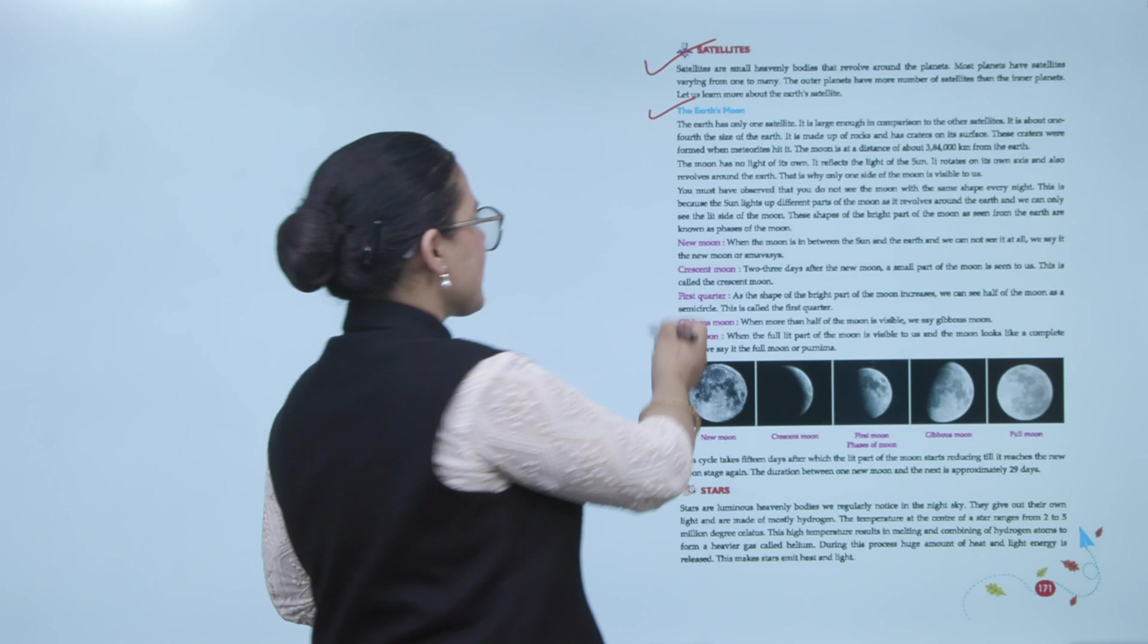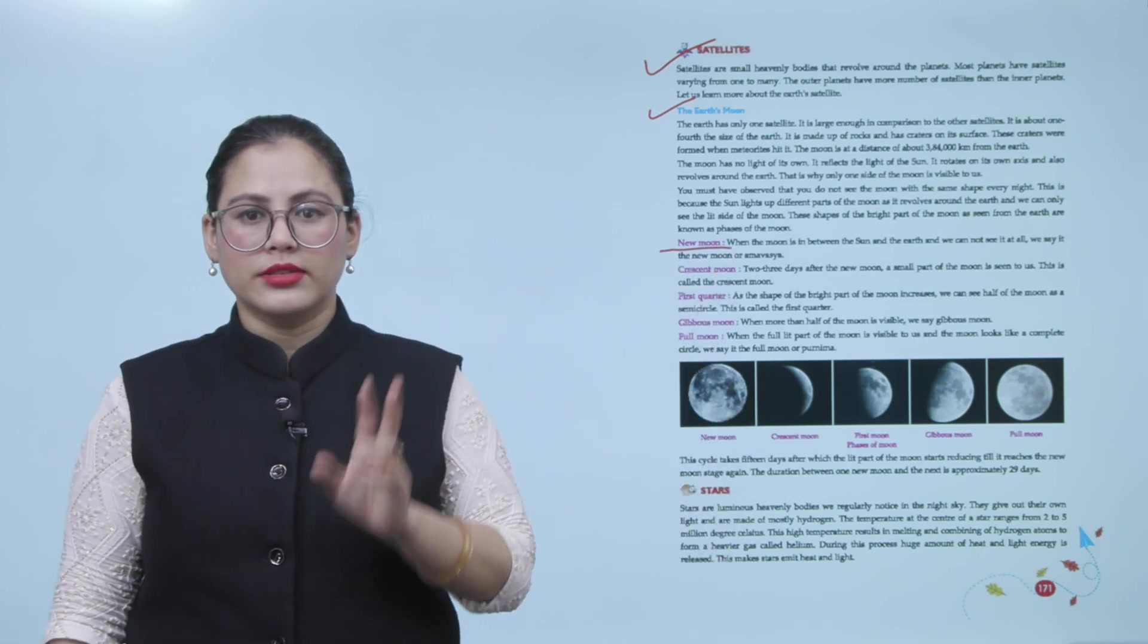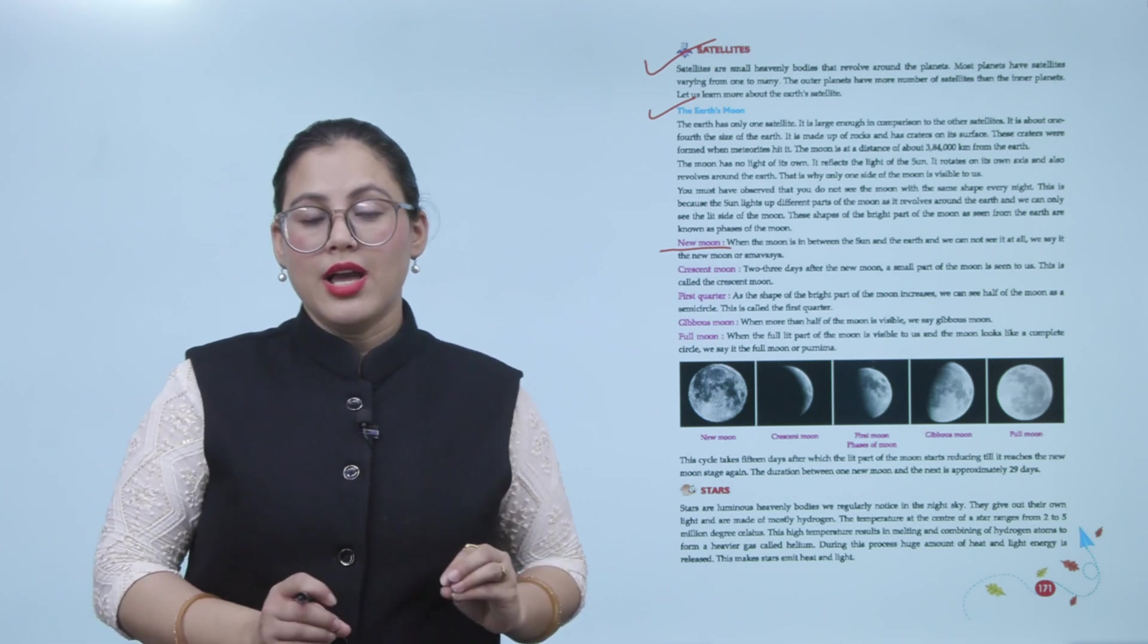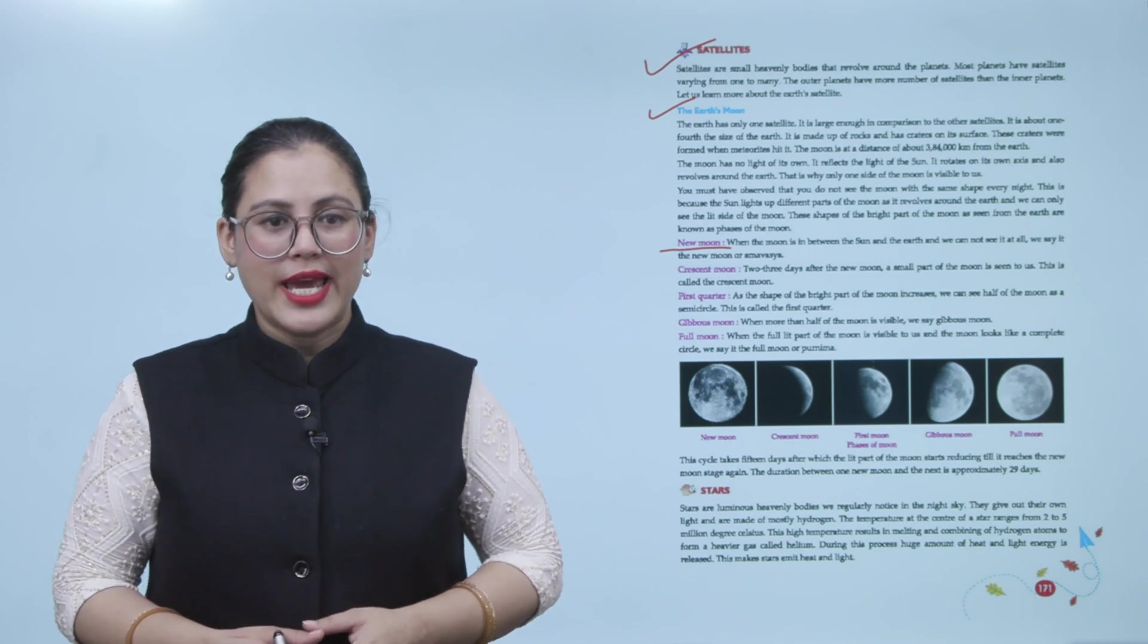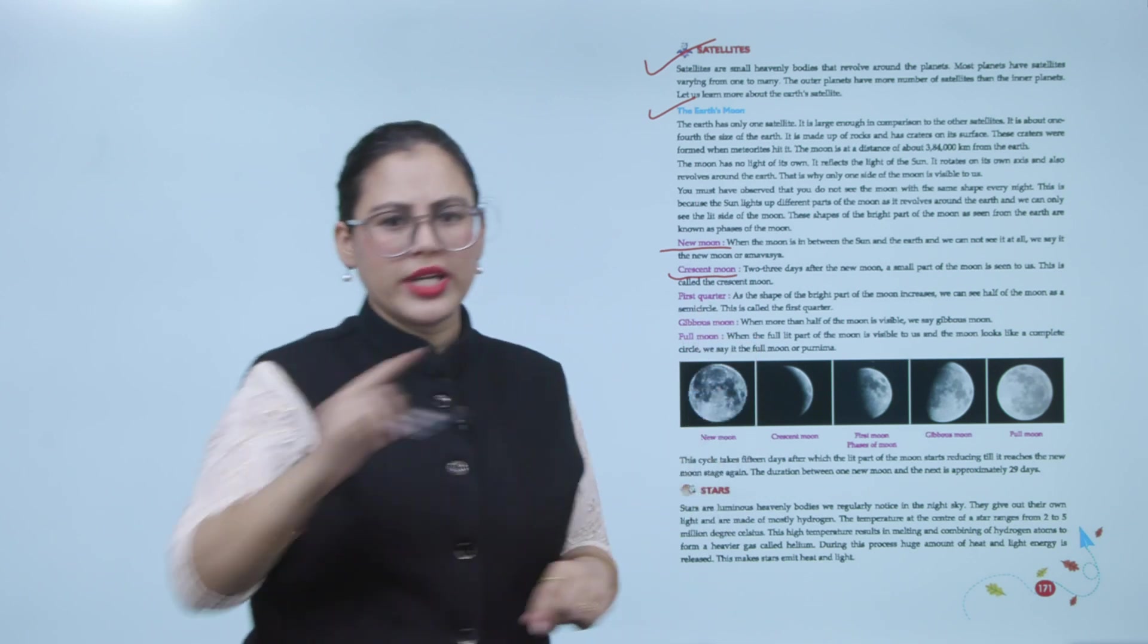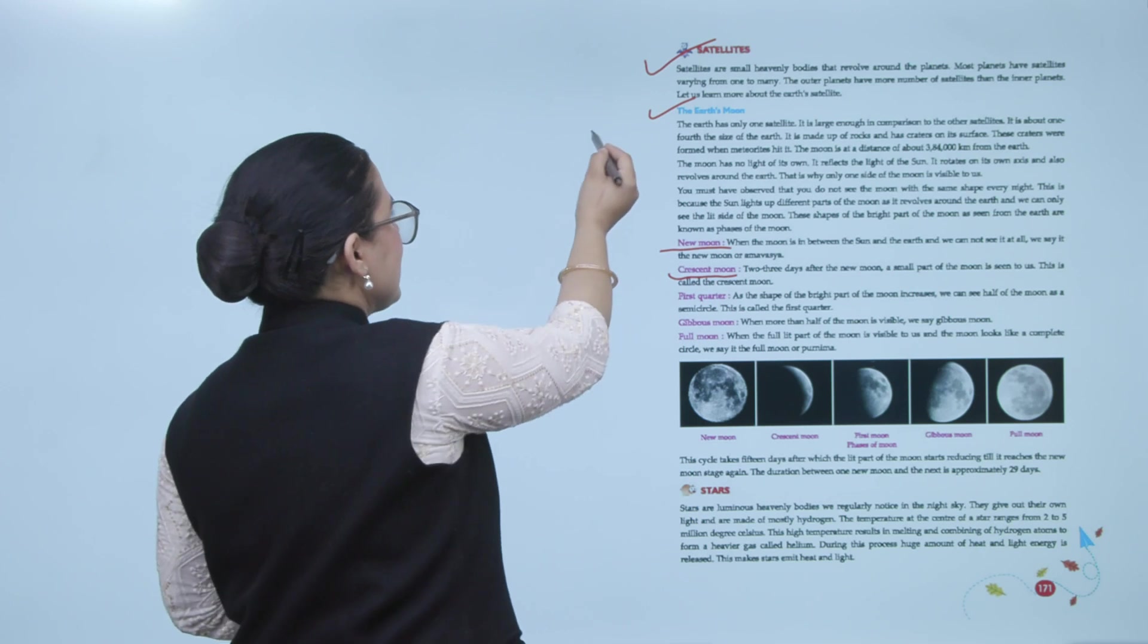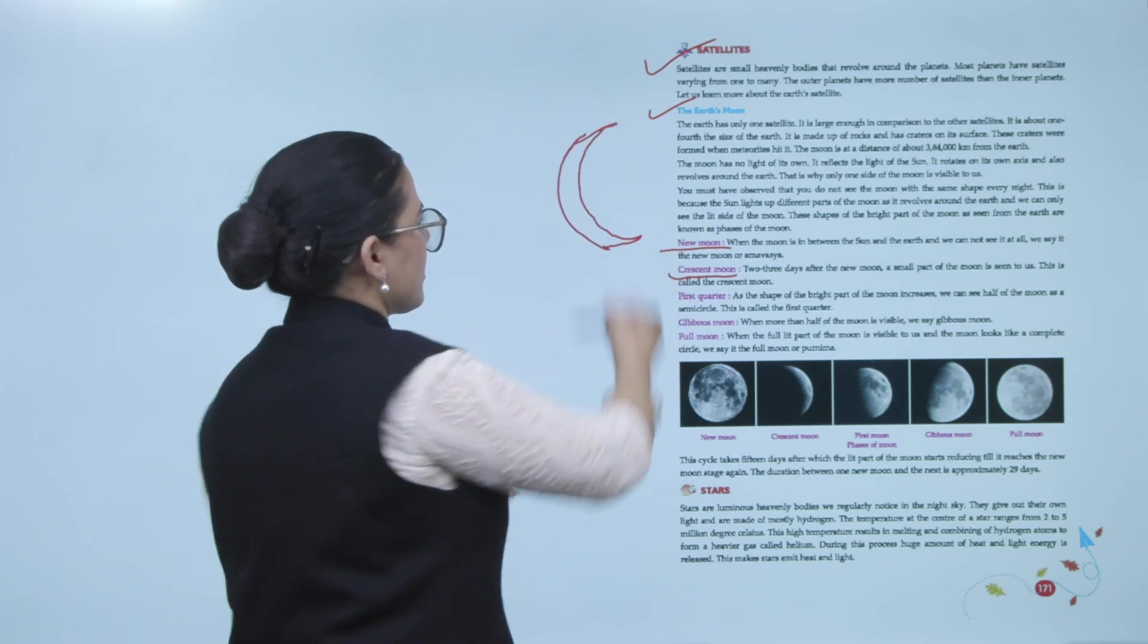New moon. When the moon is between the sun and the earth, we cannot see it at all. We see the new moon, or Amavasya. Crescent moon. Two to three days after the new moon, a small part of the moon is seen to us. This is called the crescent moon. It has a beautiful shape.